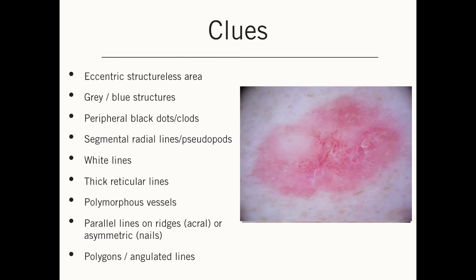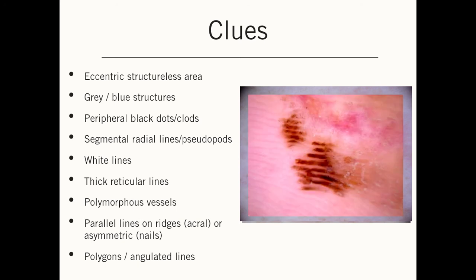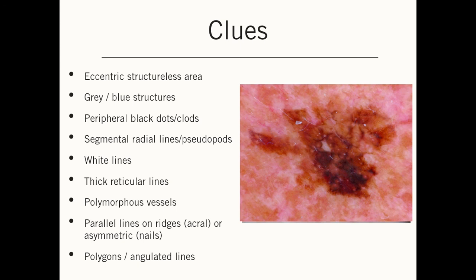In this non-pigmented lesion, you will see multiple forms of vessels: dotted vessels, linear vessels, and also serpiginous vessels. If you have multiple forms of vessels, we call that polymorphous, and this is a clue to melanoma. If you look at acral skin, the most important pattern to recognize is parallel lines that are on the ridges — the ridges being the broad lines on acral skin. On chronically sun-damaged skin, one important clue is polygons or angulated lines — lines that are larger than reticular lines and go around the whole hair follicles.